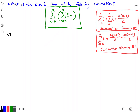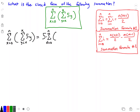So we have the summation from X equals zero to N of the summation from Y equals X to X of 5Y. This is equivalent to pulling out the constant: 5 times the summation from X equals zero to N of the summation from Y equals X to X of Y.